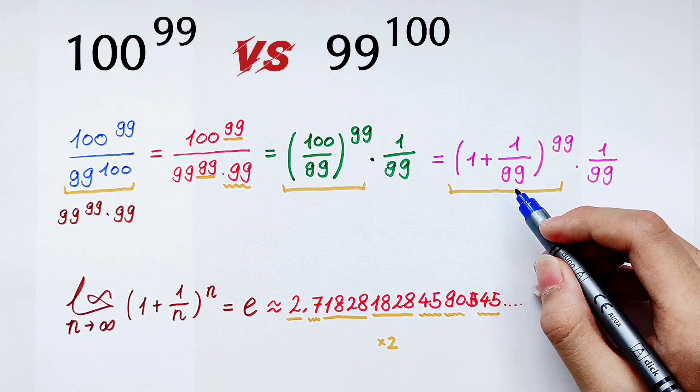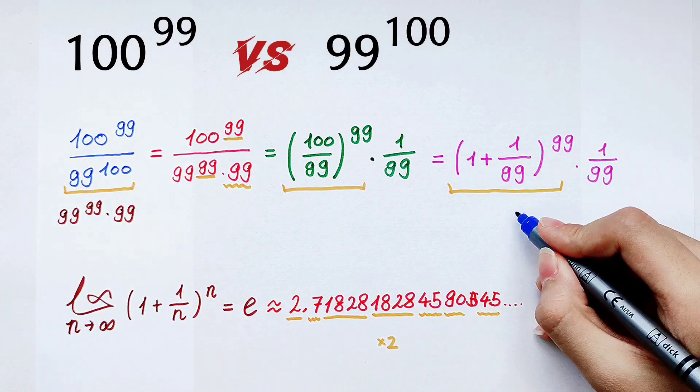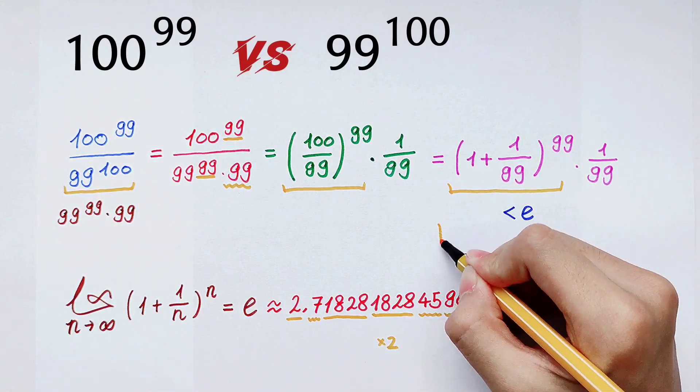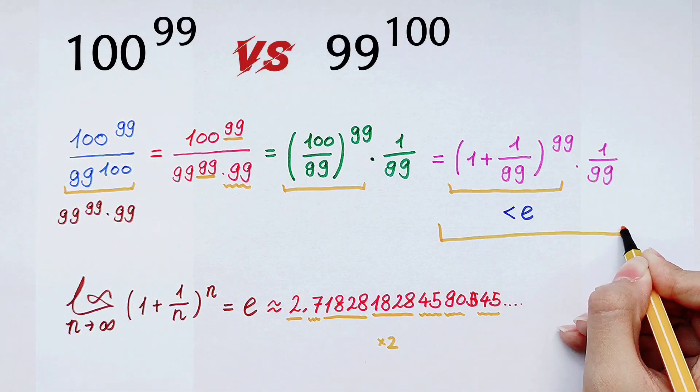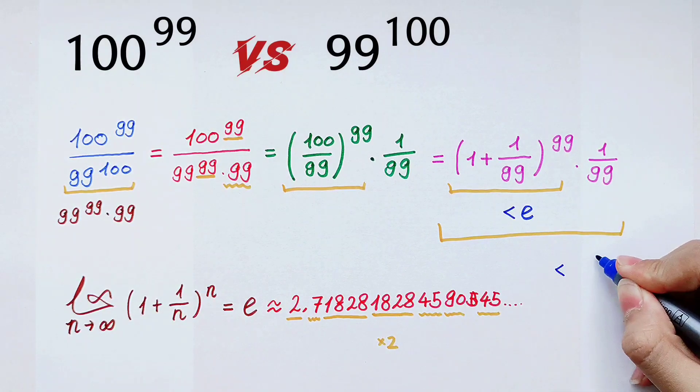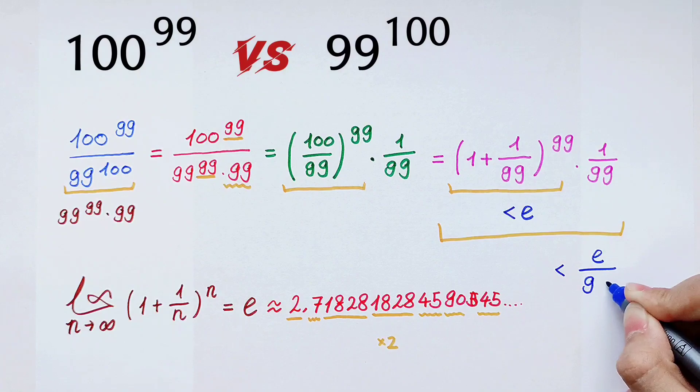So when n is 99, this value is smaller than e. This value is smaller than e/99.